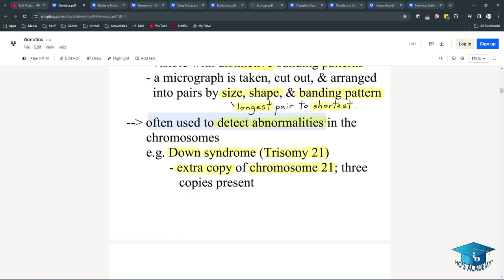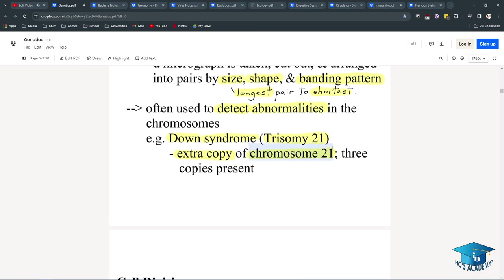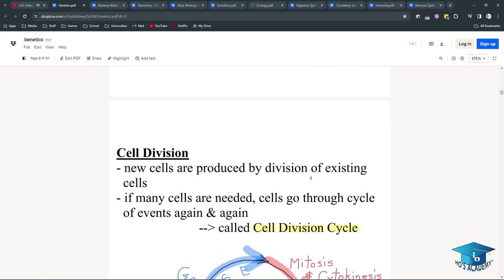Often used to detect abnormalities, such as when you have Down syndrome, trisomy 21. An extra copy of chromosome 21 for three copies present, instead of two.